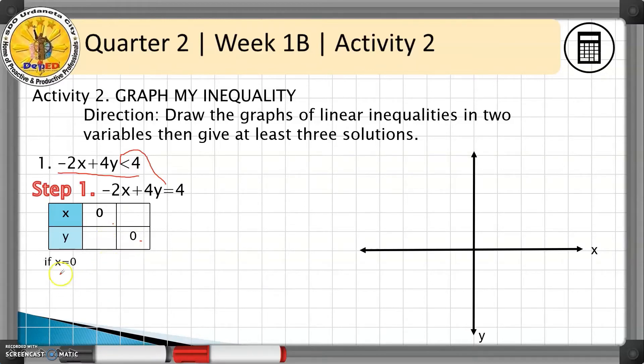If x equals 0, replacing 0 for the variable x, we have -2(0) + 4y = 4. This gives us 4y = 4, and dividing both sides by 4, we get y = 1. So we have the first ordered pair (0, 1).